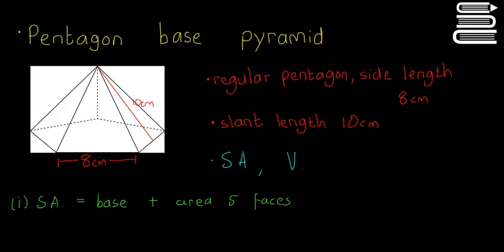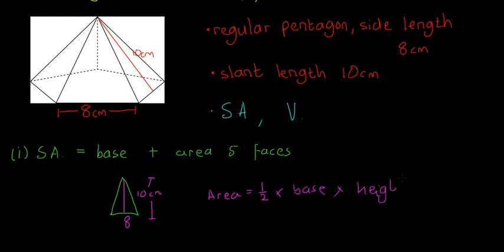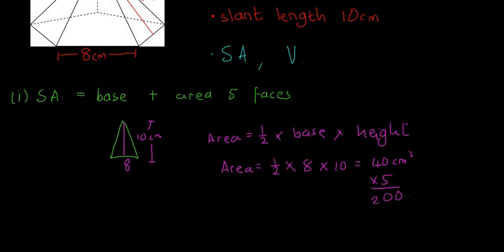The five faces are the easiest bit to get. We have a triangle where the base is 8 centimetres and the height from bottom to top is 10 centimetres. The area of a triangle is half times base times perpendicular height, so that gives us half × 8 × 10 = 40 centimetres squared. There are five of these faces, so multiplying by 5 gives us 200 centimetres squared.